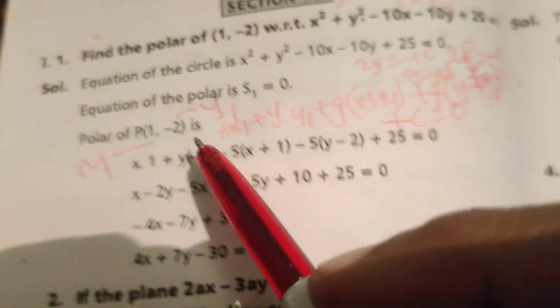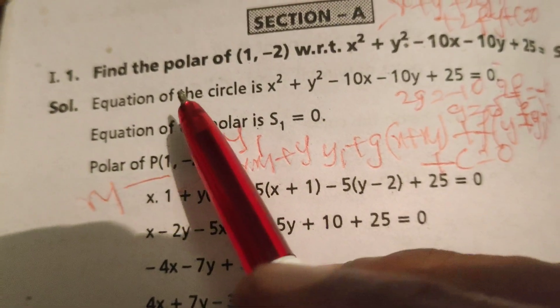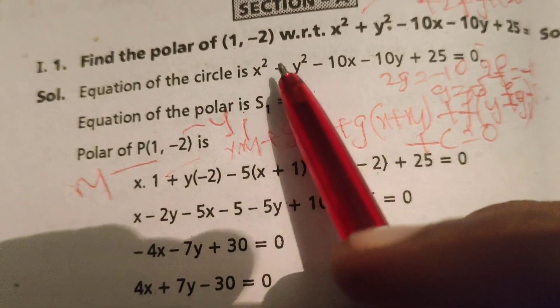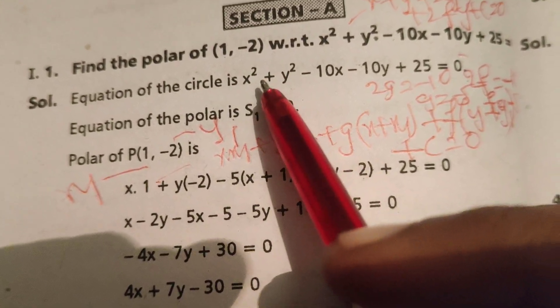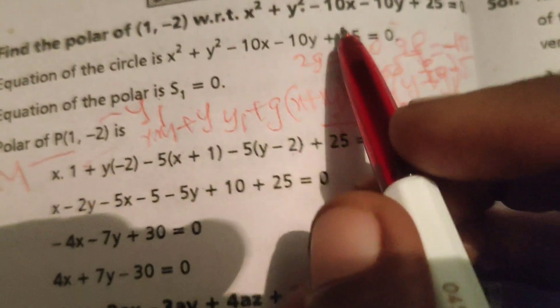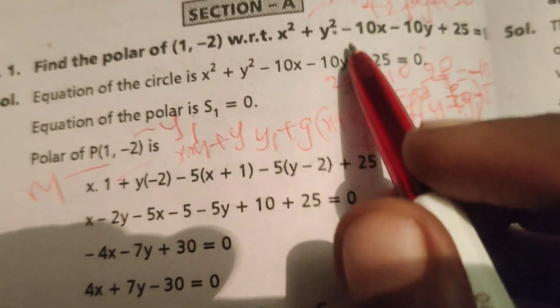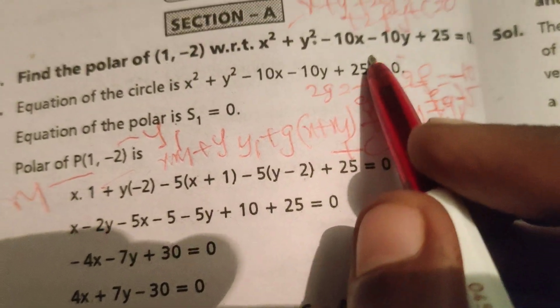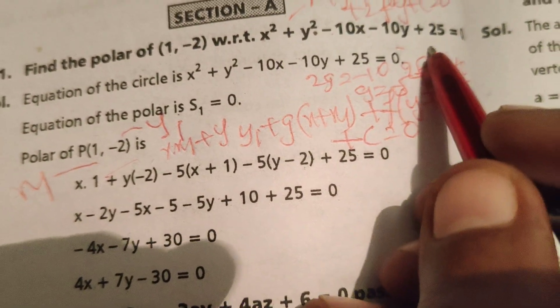Hi everyone, this is Dr. Hrithi. Today we are going to find the polar of point (1, -2) with respect to the circle x² + y² - 10x - 10y + 25 = 0.